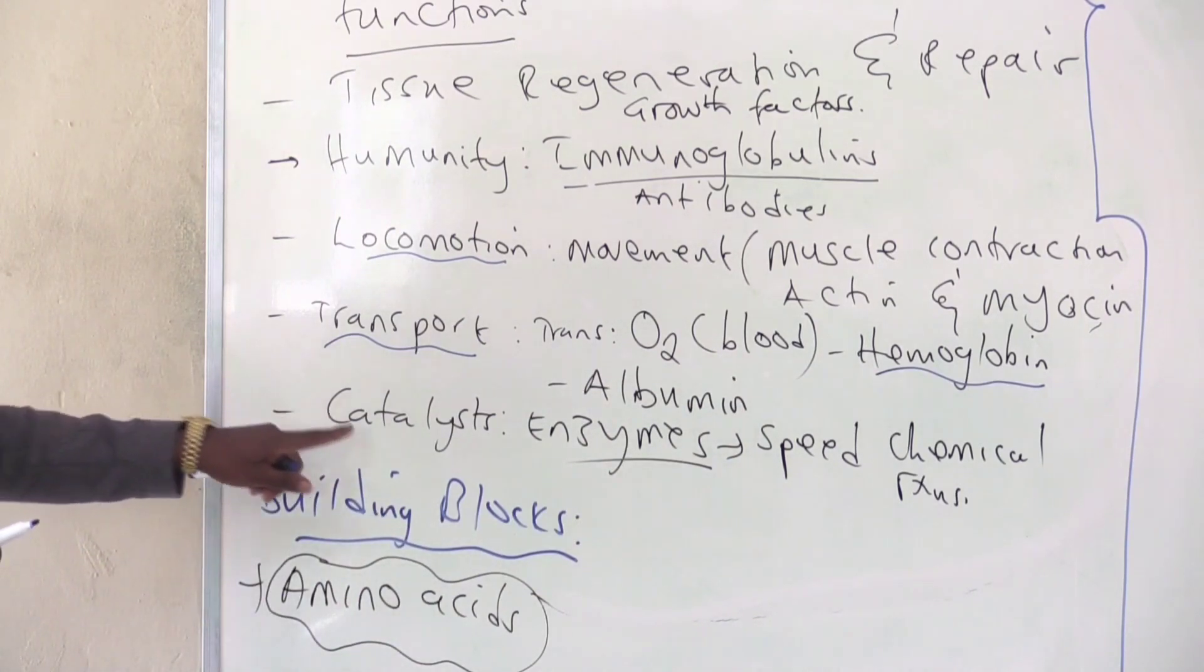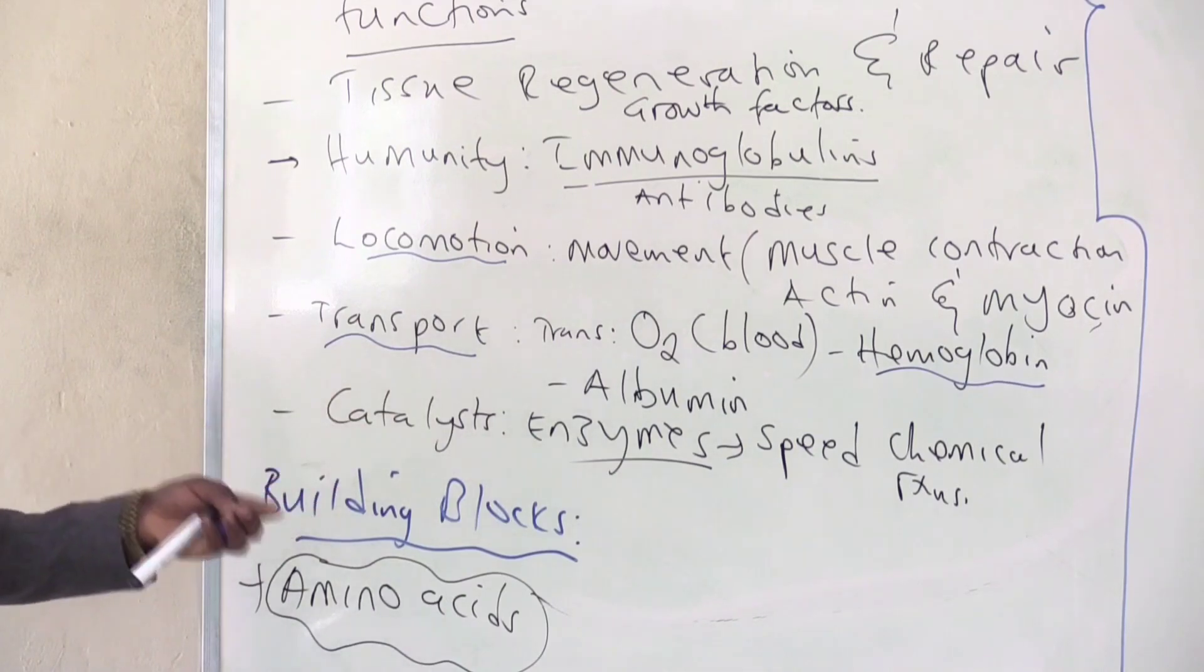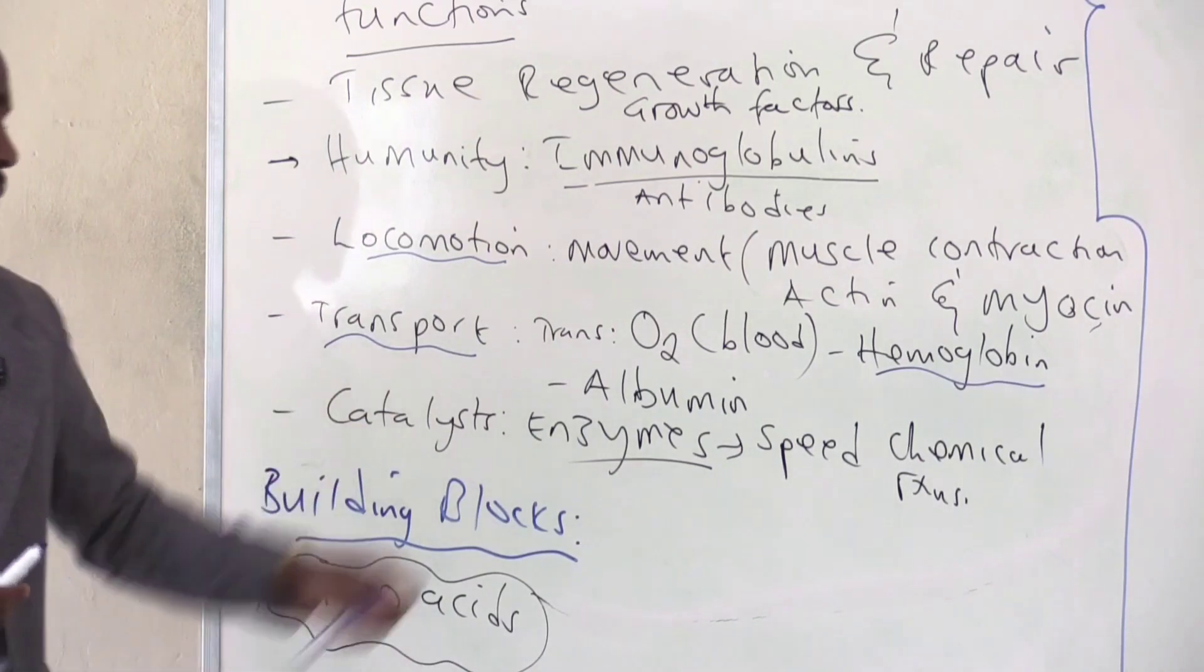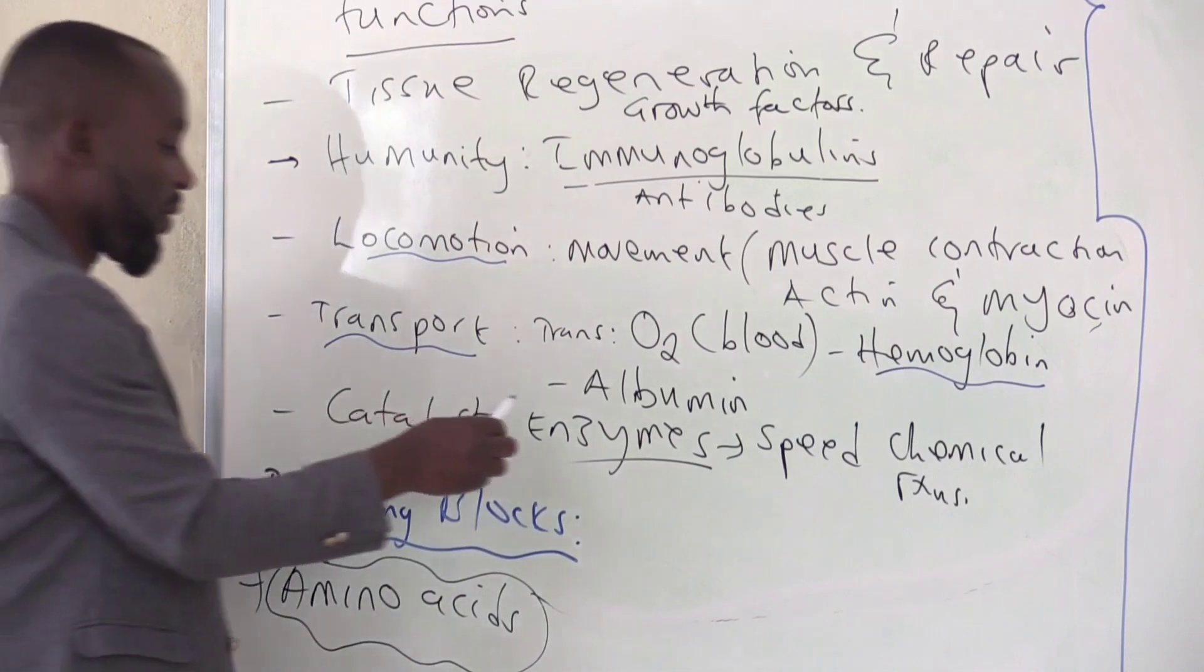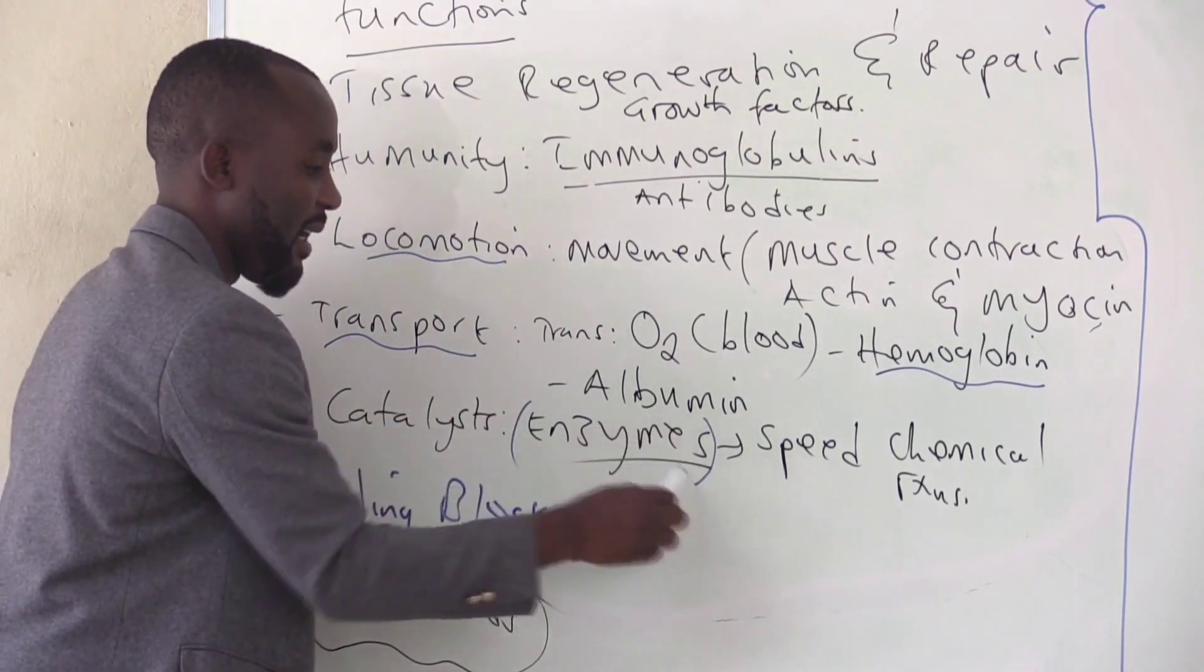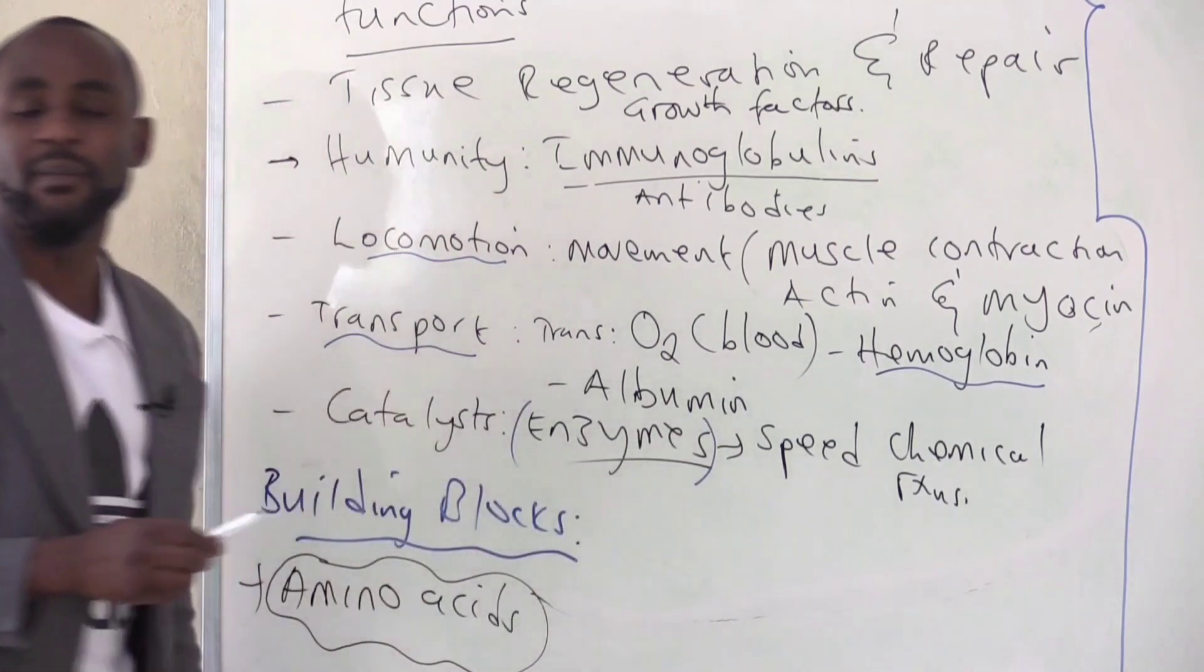Other proteins work as catalysts. What are catalysts? These are just agents that tend to speed up biochemical reactions. And examples of catalysts are enzymes. And enzymes, most of them are proteins.